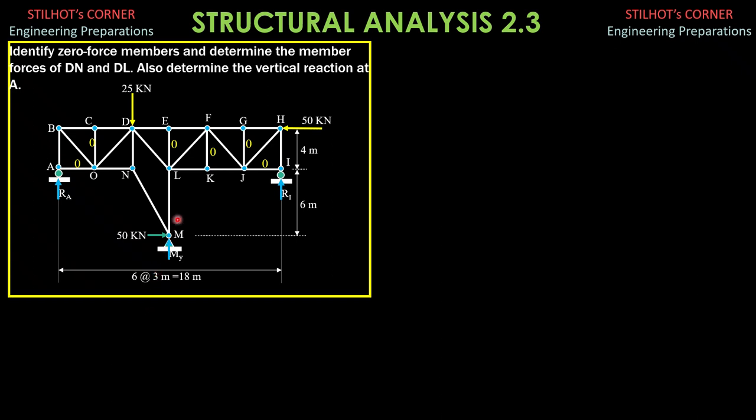So, we begin by isolating this joint M here to analyze MN. Once MN is solved, then we can isolate joint N, resolve MN in 2 components. Then, obviously, we can solve for both NO and DN. But NO is not required. It is only DN. Once DN is solved, I consider this sectioning here.